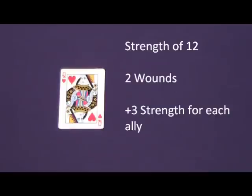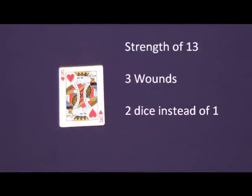A Queen has a base strength of twelve, and may take two wounds before being killed. The Queen also gets an additional three to their strength for each ally in their courtyard. The King has a base strength of thirteen, and can take three wounds before being killed. The King rolls two six-sided dice instead of only one during the dueling phase.